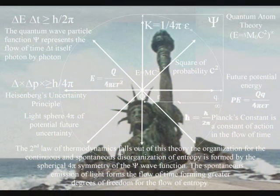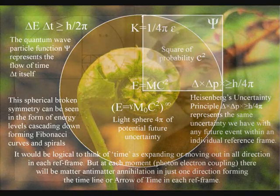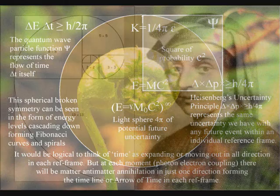This broken symmetry can be seen in the physical world as spiral symmetry in the form of the Fibonacci spiral being visible almost everywhere in nature.